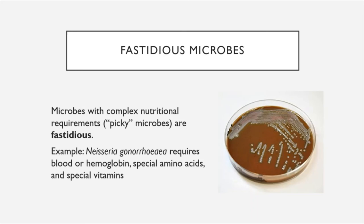Lastly, we're going to take a look at fastidious microbes — ones categorized as having particularly picky and difficult-to-nail-down nutritional requirements. There are many microbes for which we don't fully understand the range of nutritional requirements needed when growing them in a lab, so we often need to provide them with enriched media containing a highly nutrient-rich ingredient, such as sheep's blood on a blood agar plate. Neisseria gonorrhoeae, the species that causes gonorrhea, is one such example — it requires blood or hemoglobin to grow, as well as special amino acids and vitamins.